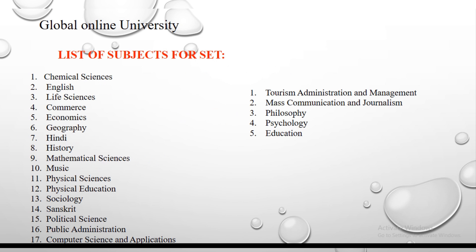Now I am going to discuss the subject list which will be conducted by the state for assistant professor: Chemical Science, English, Life Science, Commerce, Economics, Geography, History, Mathematics, Music, Physical Science, Physical Education, Sociology, Sanskrit, Political Science, Public Administration, Computer Science Application, Tourism Administration and Management, Mass Communication, Journalism, Visual Arts, Philosophy, Psychology, and Education.